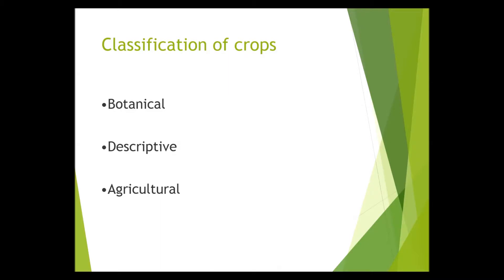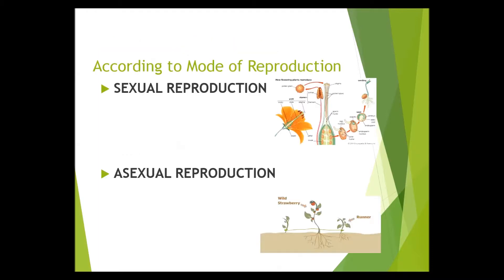We will discuss first the descriptive classification. Starting with classification according to mode of reproduction — there are two types: sexual and asexual reproduction. Sexual reproduction is through seeds, which are developed by the union of male and female gametes.